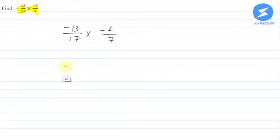This question asks what will minus 13 by 17 into minus 2 by 7 be. So what will this be? Minus into minus becomes plus. 13 into 2 is 26. And if we do 17 into 7, how much will it be?